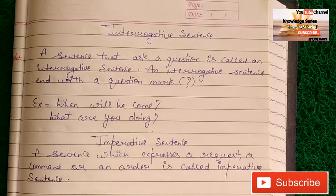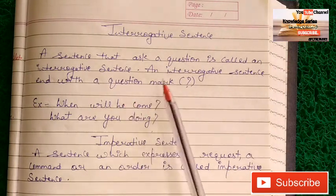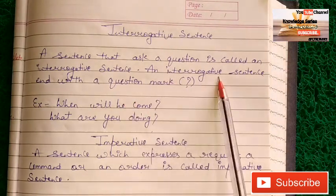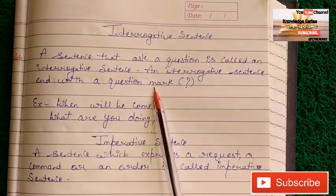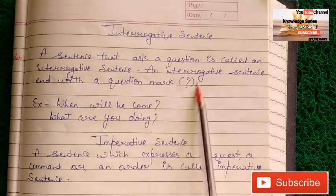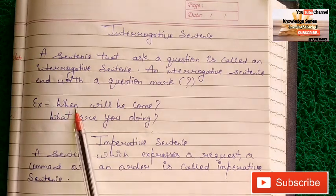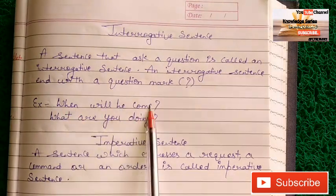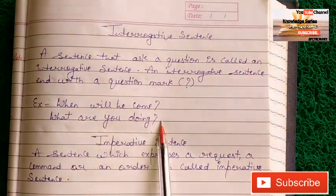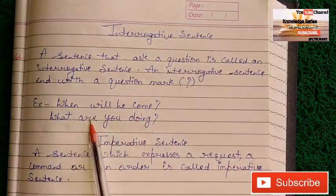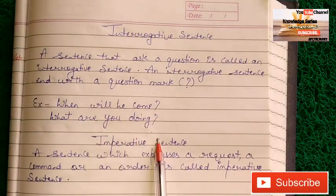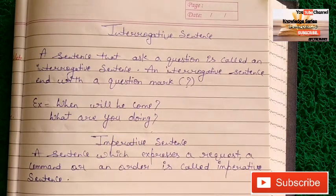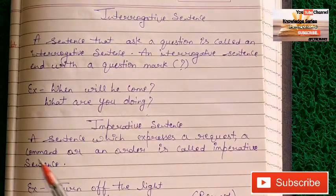Next is the interrogative sentence. A sentence that asks a question is called an interrogative sentence, and it ends with a question mark. Examples: 'When will he come?' and 'What are you doing?' — both end with a question mark.